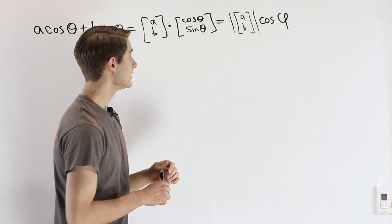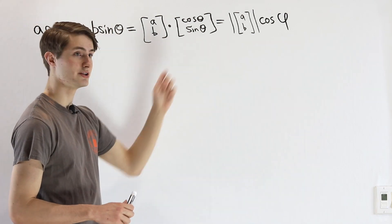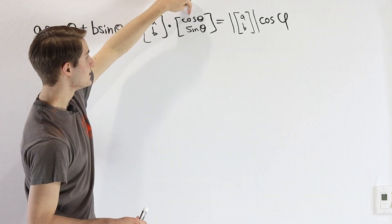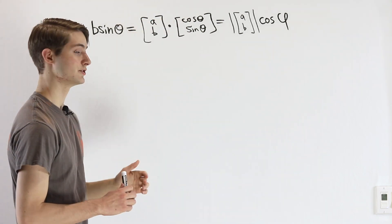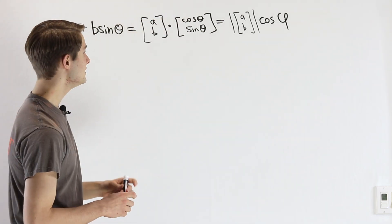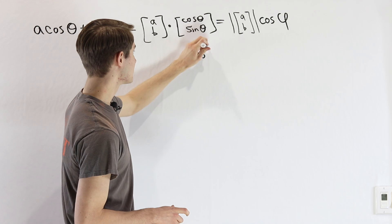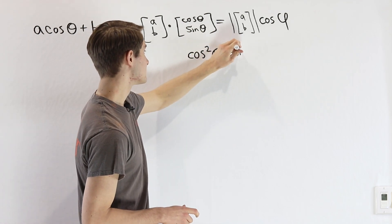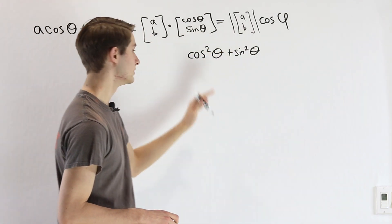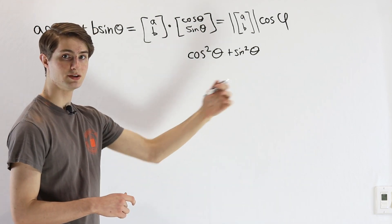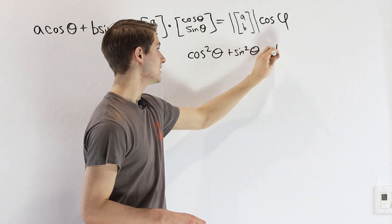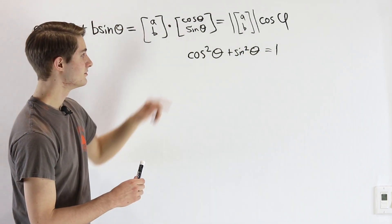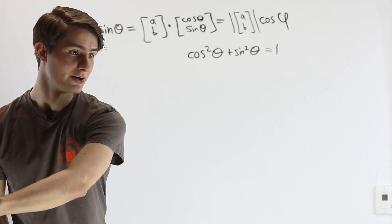The reason I didn't write the magnitude of [cos θ, sin θ] is this is actually a unit vector. It has magnitude of 1. We can see that from the fact that cos² θ + sin² θ, which determines the distance of our vector, equals 1. So we have a unit vector here. We don't have to worry about that magnitude.